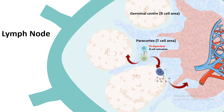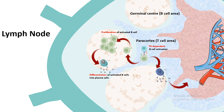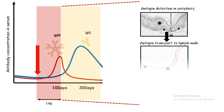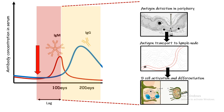Eventually, the activated B cells undergo massive clonal expansion, proliferating extensively before maturing into antibody-producing plasma cells through differentiation. During this process, many fine-tuning events occur — affinity maturation enhances the quality of antibodies produced, and isotype switching reactions take place. This entire complicated process takes considerable time, which is why there is a 10-day lag from pathogen exposure to antibody production.